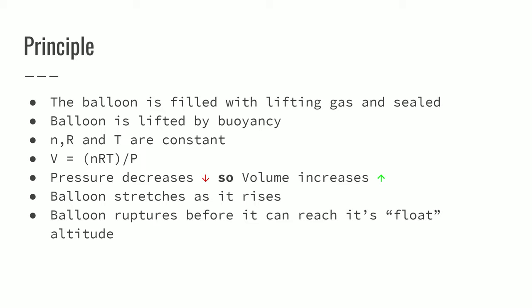Basically the pressure goes down, volume goes up. So your balloon stretches as it rises so that it can try to maintain the same pressure as the atmosphere as it goes up. And then eventually it reaches a critical diameter. Some failure mode propagates through it and the balloon disintegrates into a bunch of rubber bands basically.